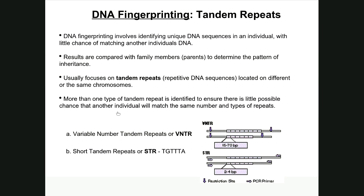More than one type of tandem repeat is identified to ensure little chance that another individual will match the same number. When fingerprinting DNA, it's comparable to taking fingerprints from every fingertip, every toe, scanning your eyes — fingerprinting everything, but at the DNA level. There are different types of tandem repeats: some are very long, 16 to 70 base pairs in length, called variable number of tandem repeats, or VNTRs. Today's lab focuses on shorter tandem repeats. Tandem means one after the other.